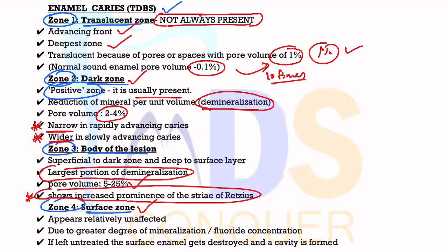The Body of the Lesion shows an increased prominence of the striae of Retzius. This can be asked as a question — it was once asked in the PGA exam. The question: 'Increased prominence of striae of Retzius is seen in which histological zone of enamel caries?' The answer is Zone 3, that is the Body of the Lesion.